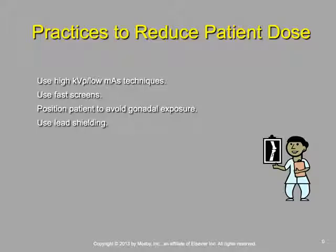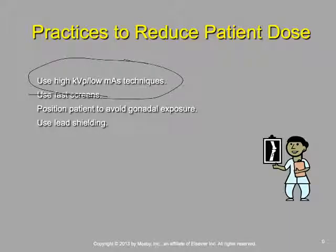What you're receiving now are just the fundamentals — the base terminology — and the significance of digital imaging. Here are some general ways to reduce patient dose. Even on this slide from the textbook, 'use fast screens' is out — we're not using screens anymore. What is in is this: high KVP, low mAs. High KVP, low mAs. If you forget everything else I said today, remember that. We can position patients in ways that avoid gonadal exposure, and we can employ lead shielding.